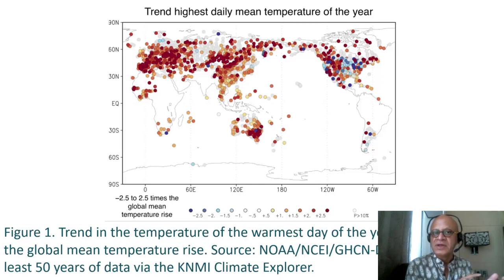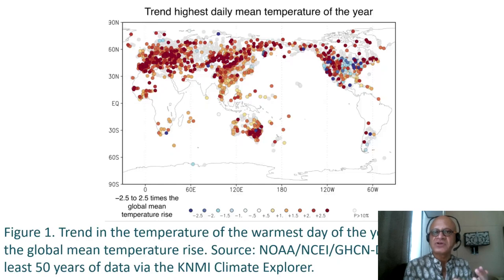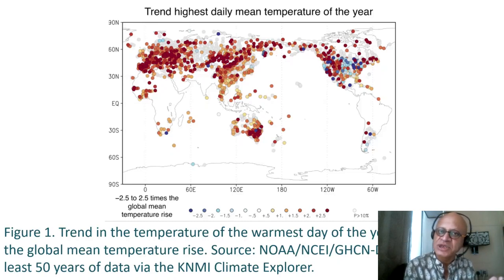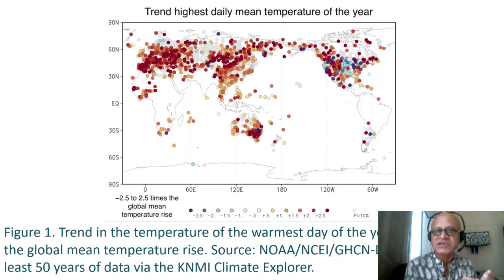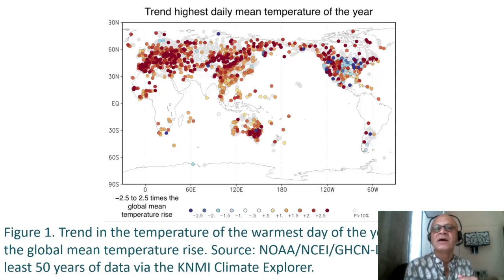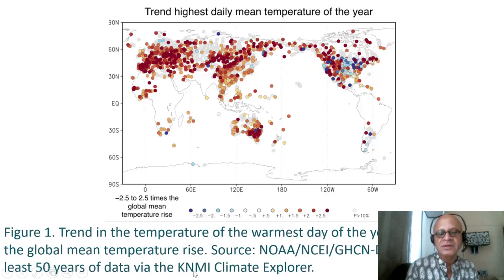When attributing extremes to climate change, you have to be very careful because they often rely on models to look at how the probability of a certain heat wave — like the one in Western US and Canada — was increased by anthropogenic warming, or how the amplitude was increased by global warming. So the probability of the heat wave occurring versus its amplitude matters: it may be something that would have occurred anyway, but the amplitude was highly enhanced by global warming. This is the KNMI Dutch Meteorological Institute that does this analysis.